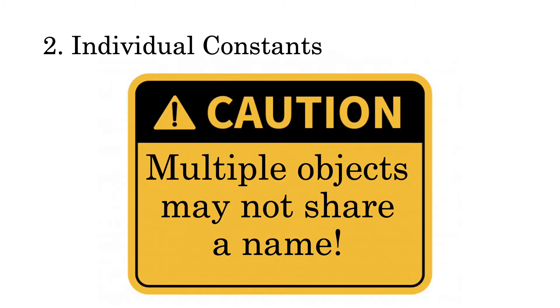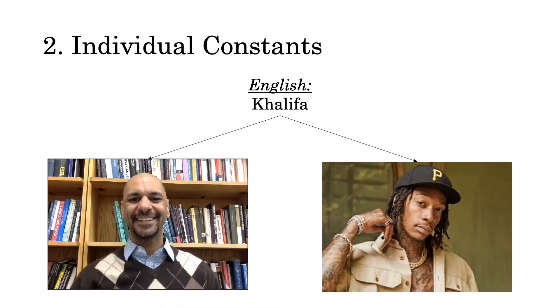There are, however, important differences between proper names in English versus individual constants in first order logic. Specifically, you can only assign one object per name in first order logic. That's not true of English in general. Let me give you an example. As many of you may know, I share a last name with a famous rapper, Wiz Khalifa. So, in English, it's perfectly okay to refer to both of us as Khalifa.